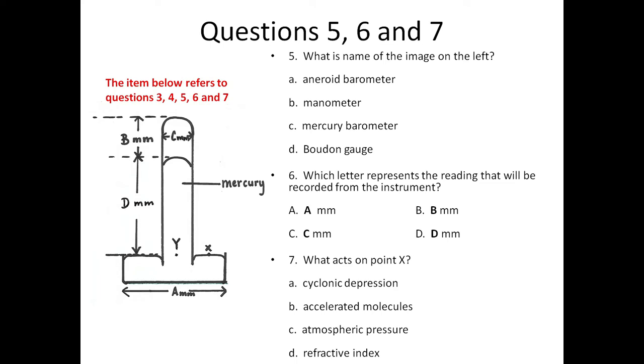Seven: What acts on point X? A: Cyclonic depression, B: Accelerated molecules, C: Atmospheric pressure, or D: Refractive index.